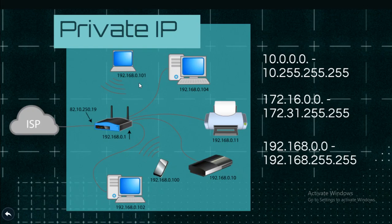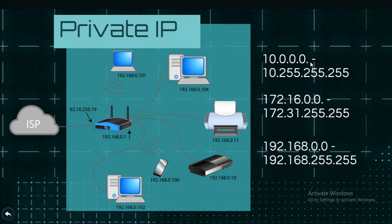So, there is a large company — for example, Google has a private IP. You can assign a private IP within the region. Most IT companies use a specific IP range, and this range is very common.